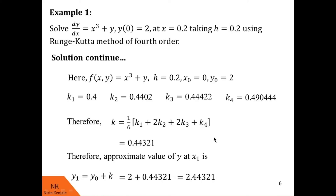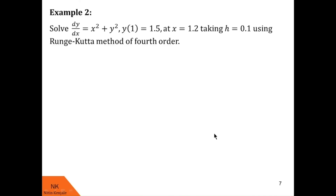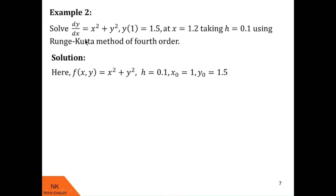I hope you understood all the steps involved in this solution. Let me show you one more example. Here we are asked to solve dy/dx = x² + y² with initial condition y(1) = 1.5 at x = 1.2, taking h = 0.1, using the Runge-Kutta method of fourth order. We note: f(x, y) = x² + y², h = 0.1, x₀ = 1, y₀ = 1.5.